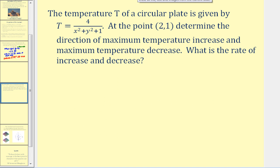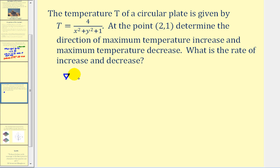Let's take a look at another example. The temperature of a circular plate is given by this function. At the point two, one, determine the direction of maximum temperature increase and maximum temperature decrease, and the rate of increase and decrease. All this information can be determined by the gradient of T, so let's start by determining the gradient of T.